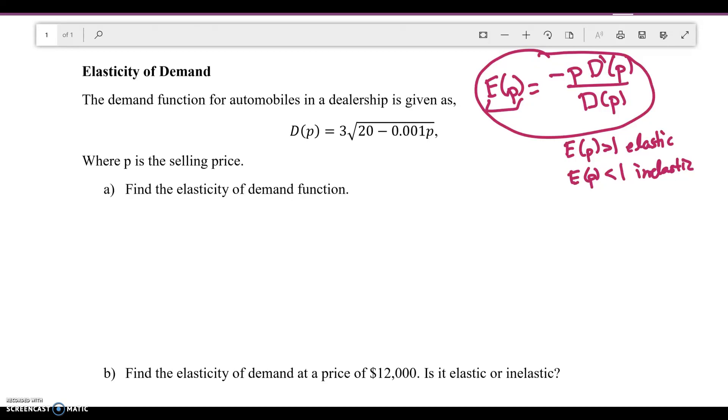So what we really want to figure out for this problem is the demand function for automobiles in a dealership is given as D of P equals 3 square root of 20 minus 0.001P, where P here is the selling price. Find the elasticity of demand function. So we're just literally looking for E of P. So E of P is equal to negative P D prime of P divided by D of P. They don't give us a P, so we're just going to have a formula at the end. Now let's take the derivative of D of P.